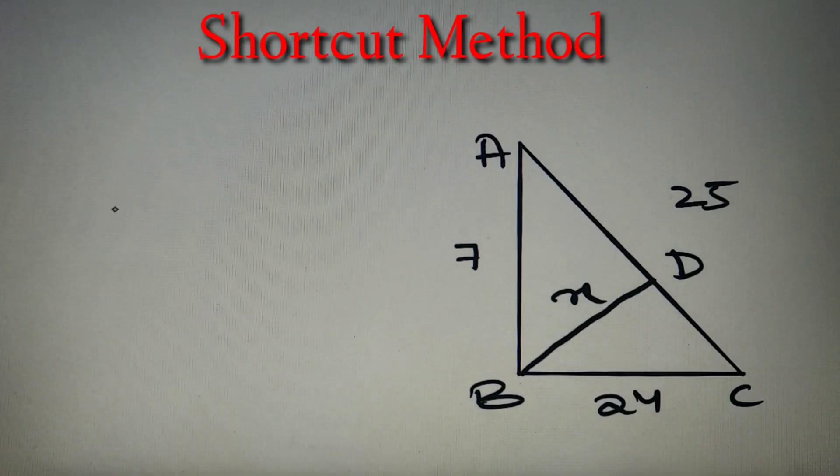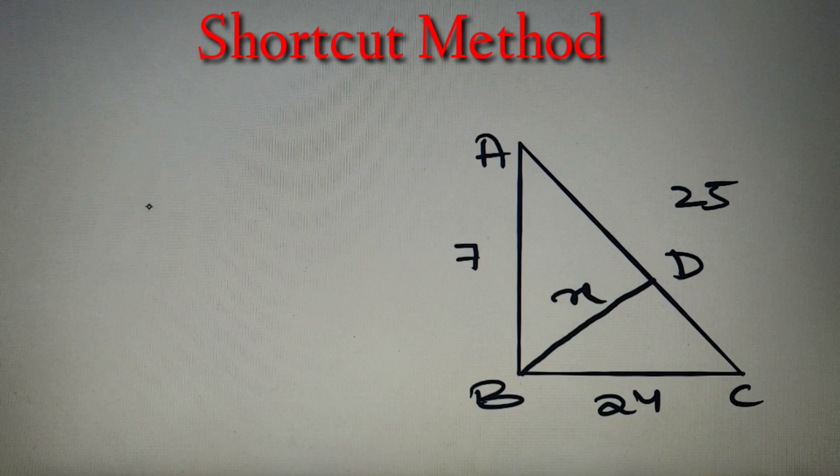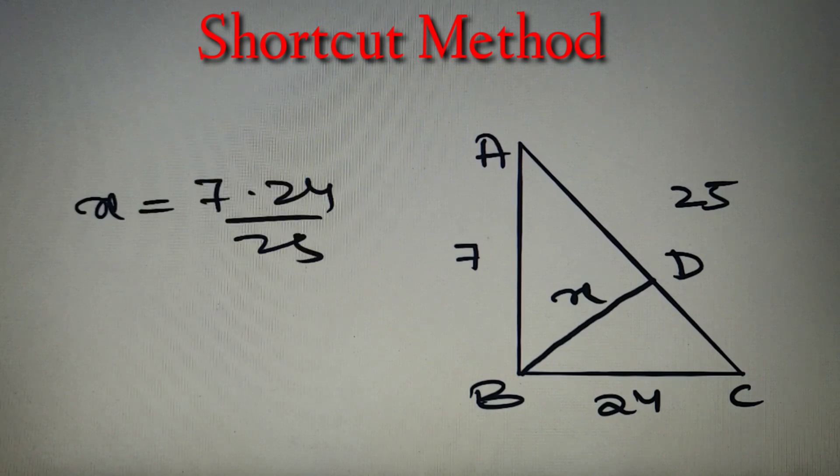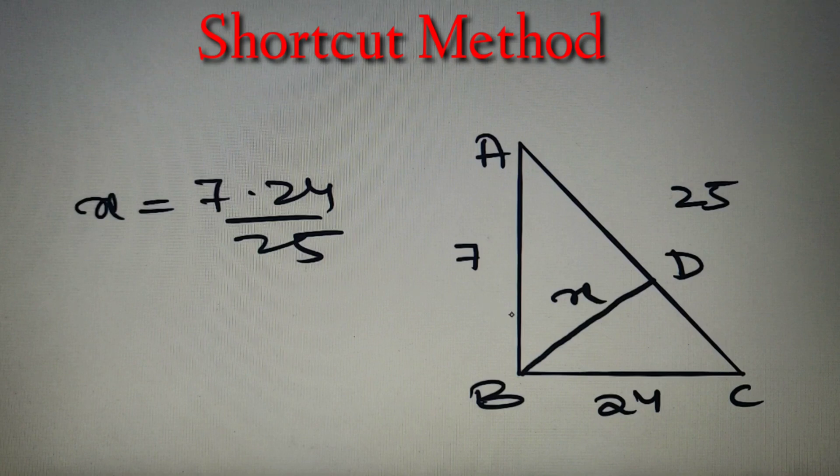We have got a solution using the longer method. Now let's discuss the shortcut method. By using the shortcut method, we can directly write the value of X, that is the length of BD, as 7 times 24 divided by 25.